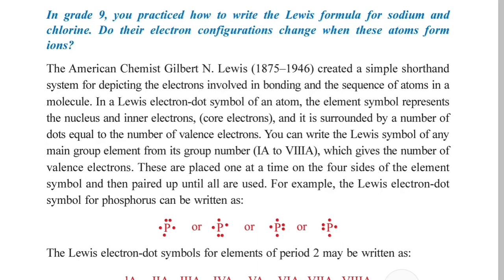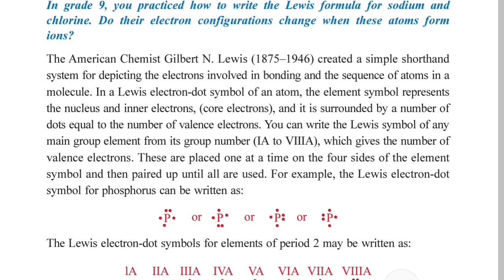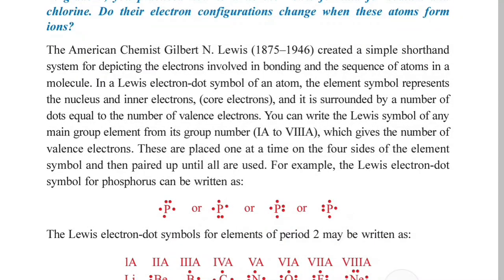It is a core electron. It is surrounded by a number of dots equal to the number of valence electrons. You can write the Lewis dot symbols of any main group element — the group number gives the number of valence electrons, from group 1 up to group 8.